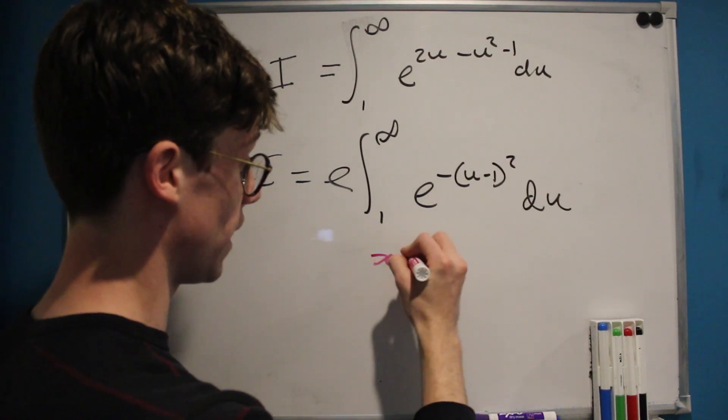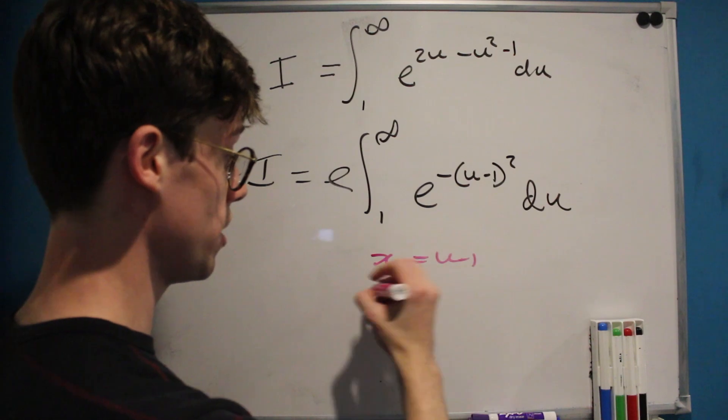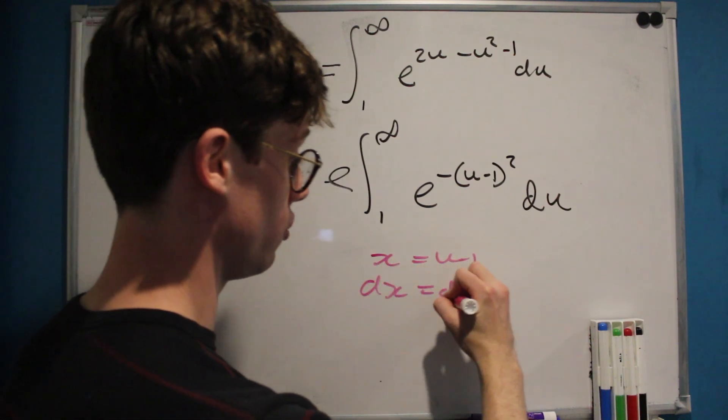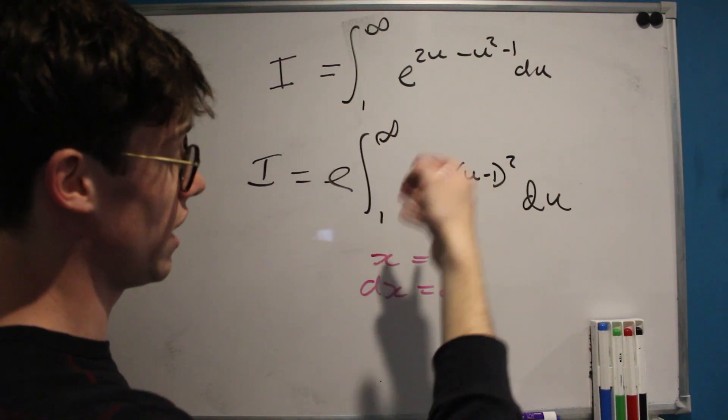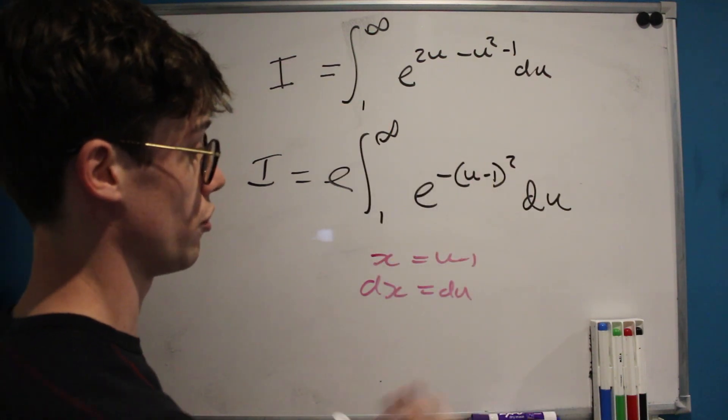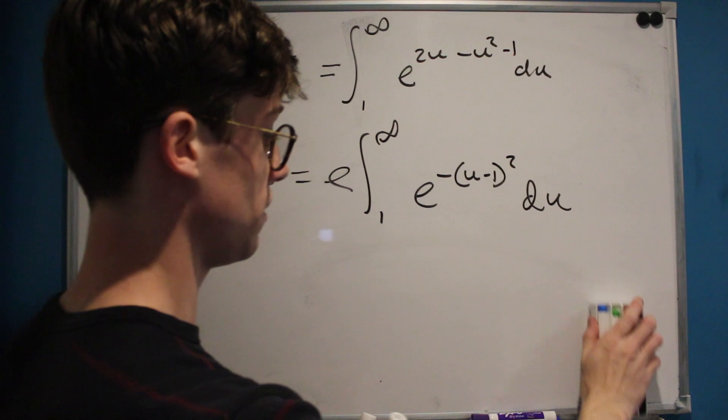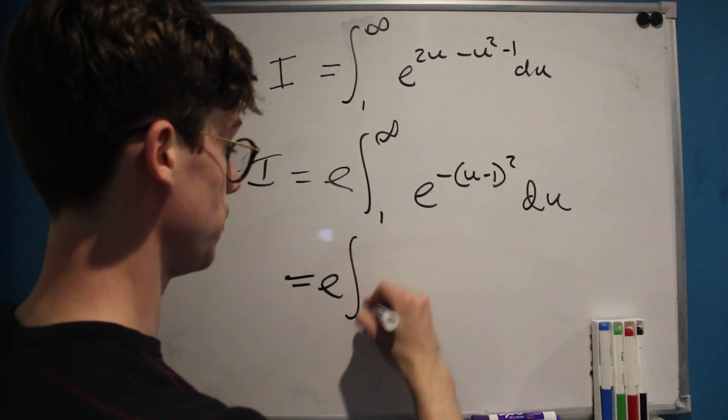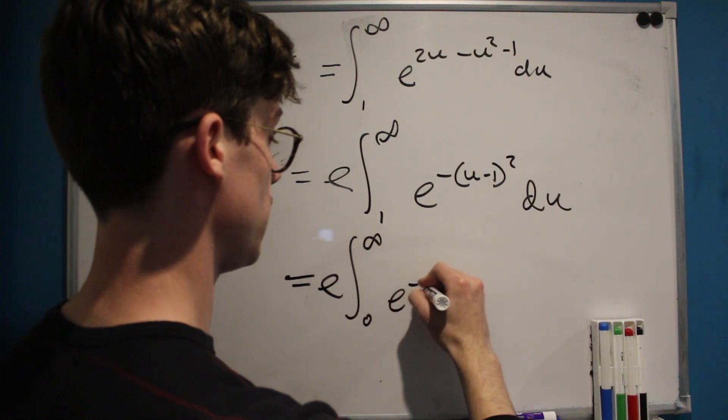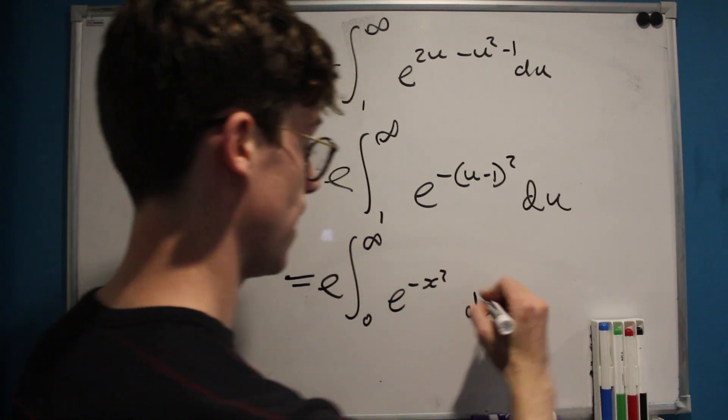All we have to do is let x equal u minus 1, leaving dx equal to du, and of course let's consider our bounds: as u approaches 1, x approaches 0, and as u approaches infinity, x approaches infinity. And we've got ourselves a new integral, it's e multiplied by the integral from 0 to infinity of e to the negative x squared dx.